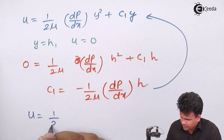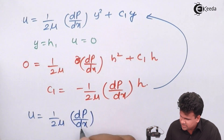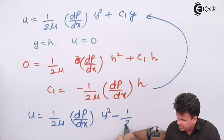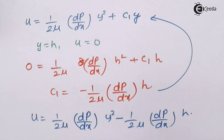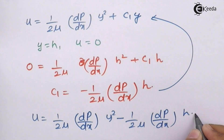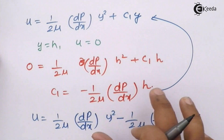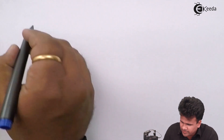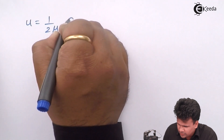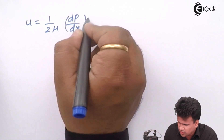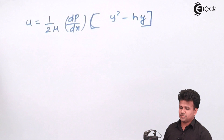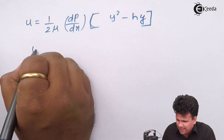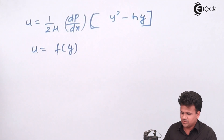Substituting c₁ back into the equation, u = (1/2μ)(dp/dx) · y² − (1/2μ)(dp/dx) · h · y. Taking (1/2μ)(dp/dx) as common, u = (1/2μ)(dp/dx) · (y² − h·y). So u is expressed as a function of y, and this is a second degree curve.